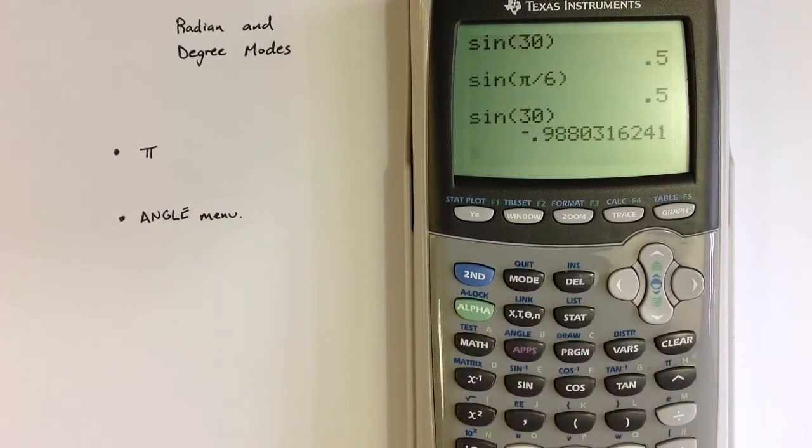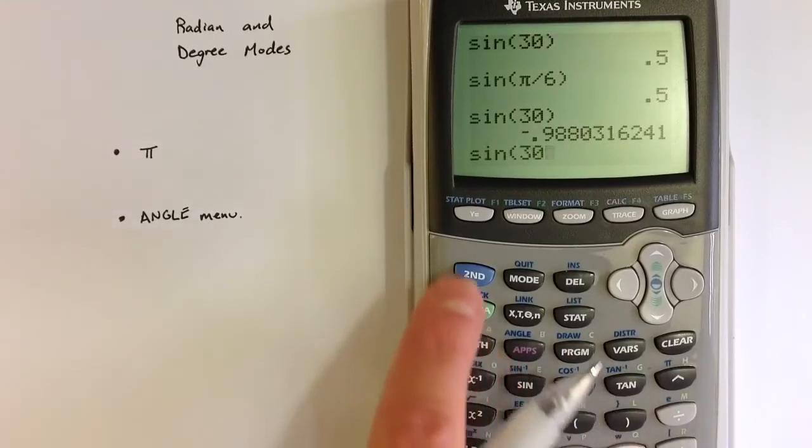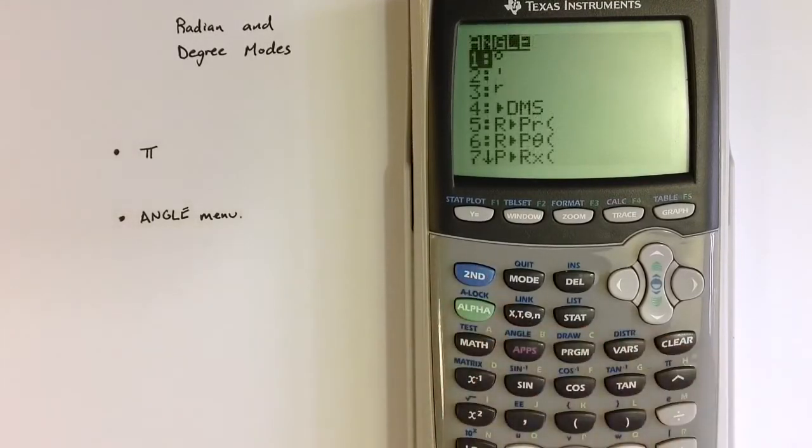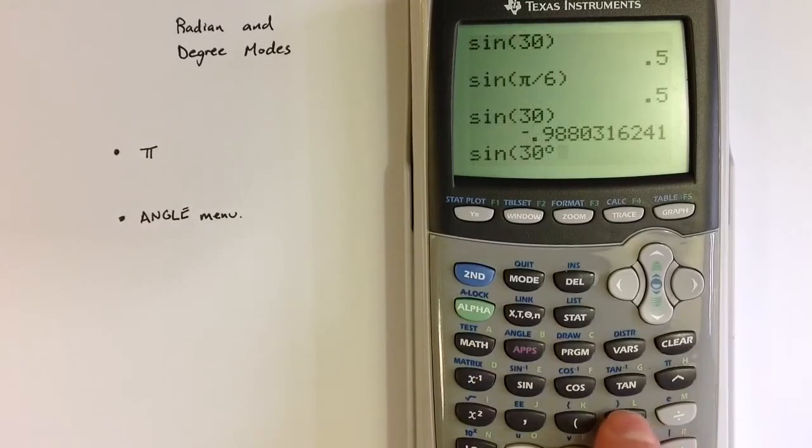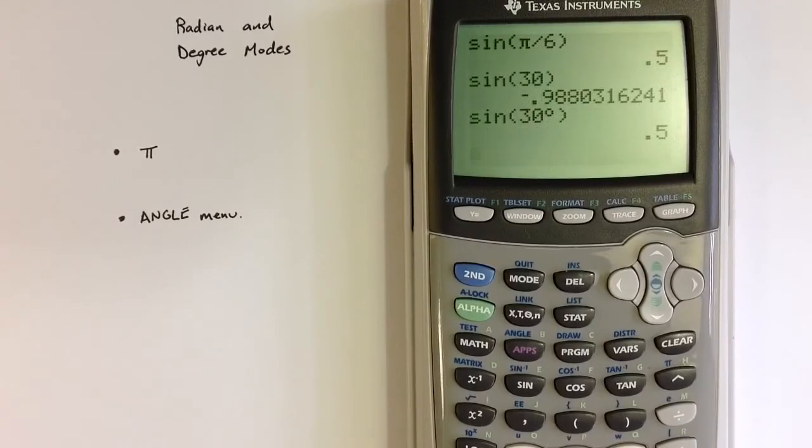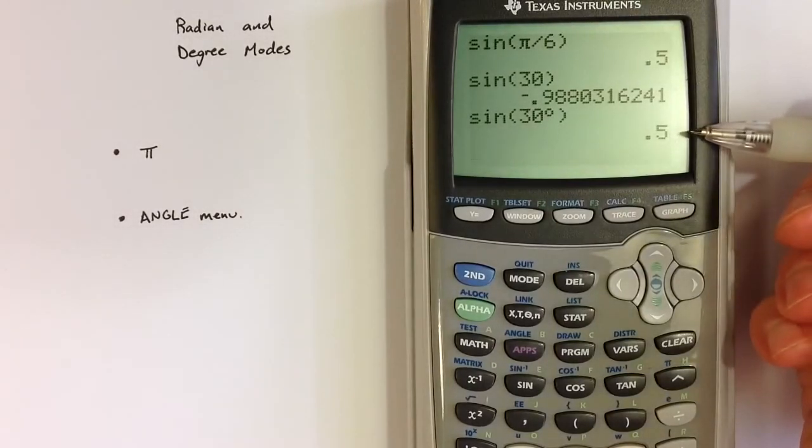So in radian mode, if I type in sine of 30 but want that 30 to represent degrees, I could go to the angle menu and explicitly identify that as degrees. That overrides the default and gives us the value we would expect. The sine of 30 degrees is one-half.